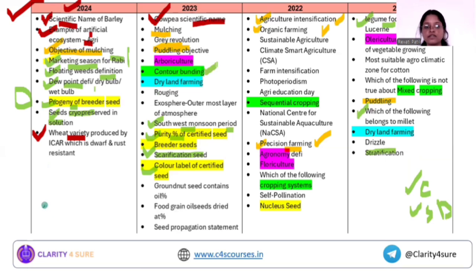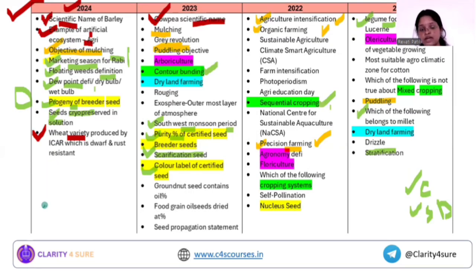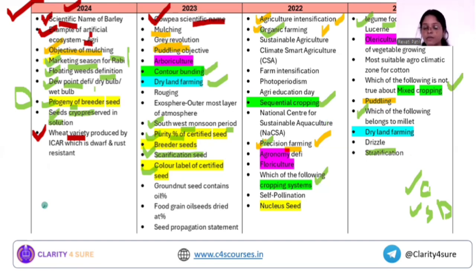Next, from agronomical measures for soil and water conservation. Cropping systems are again an important part — you need both conceptual and basic understanding of the types and different cropping systems. Sequential, mixed — every year there is one question from the cropping system. Again, farming systems like organic farming, precision farming, dryland farming, and different agro-farming systems — you need to focus on those. The broader topics from which questions come are: classification of field crops, cropping system, farming systems, seed classes, seed dormancy, and the branches of agriculture.